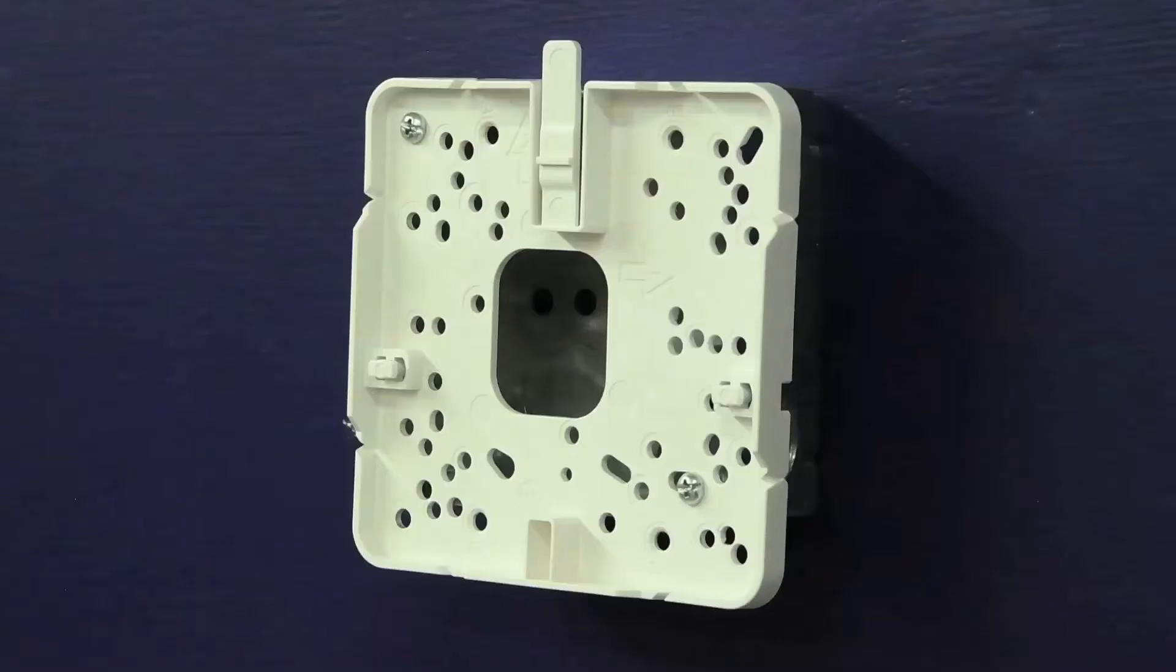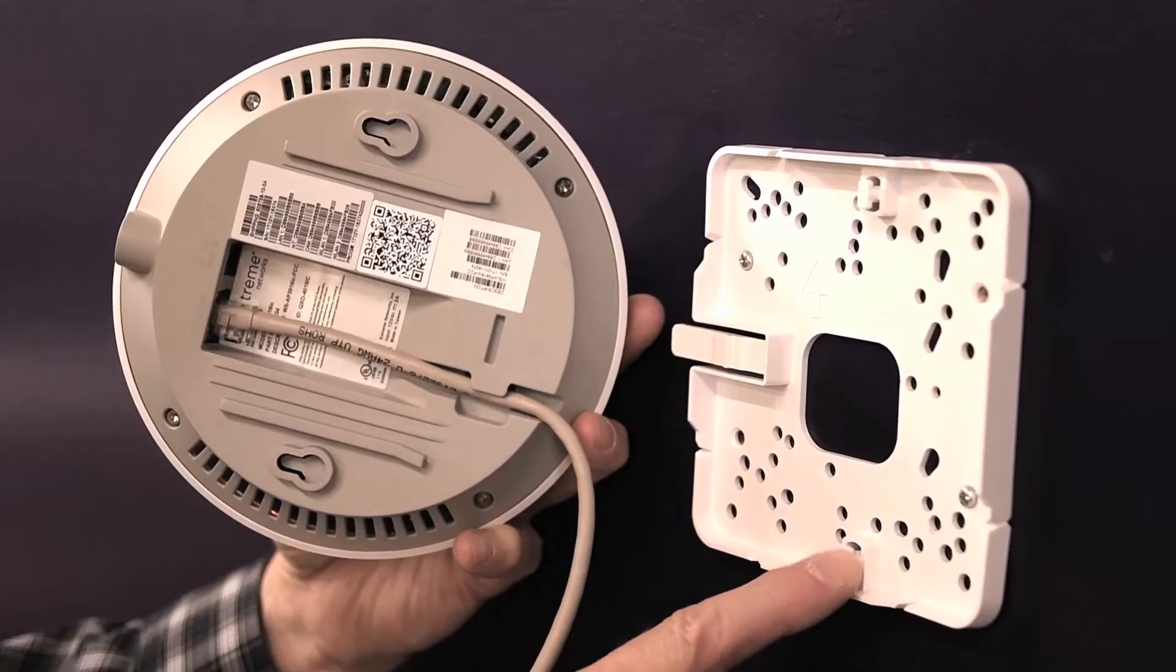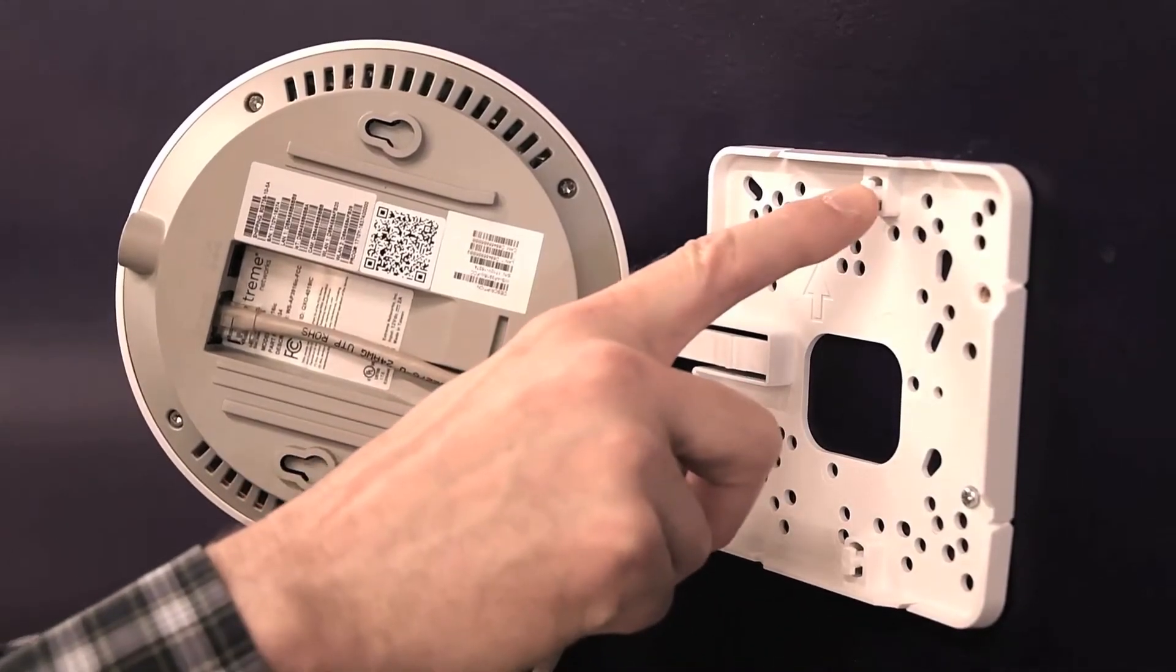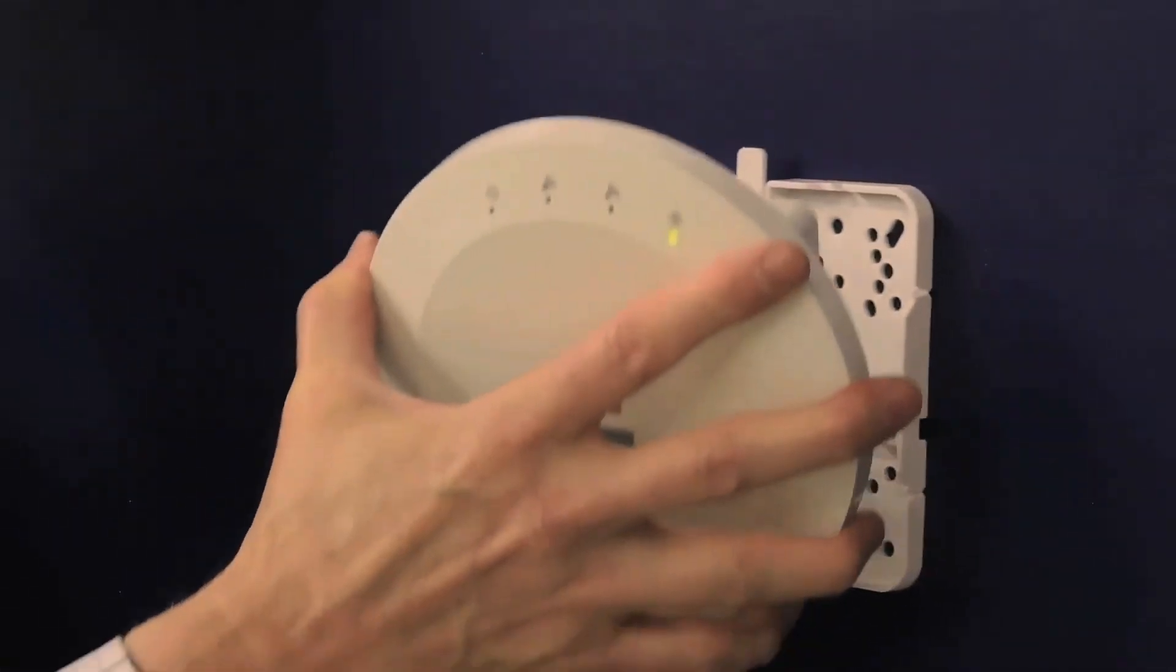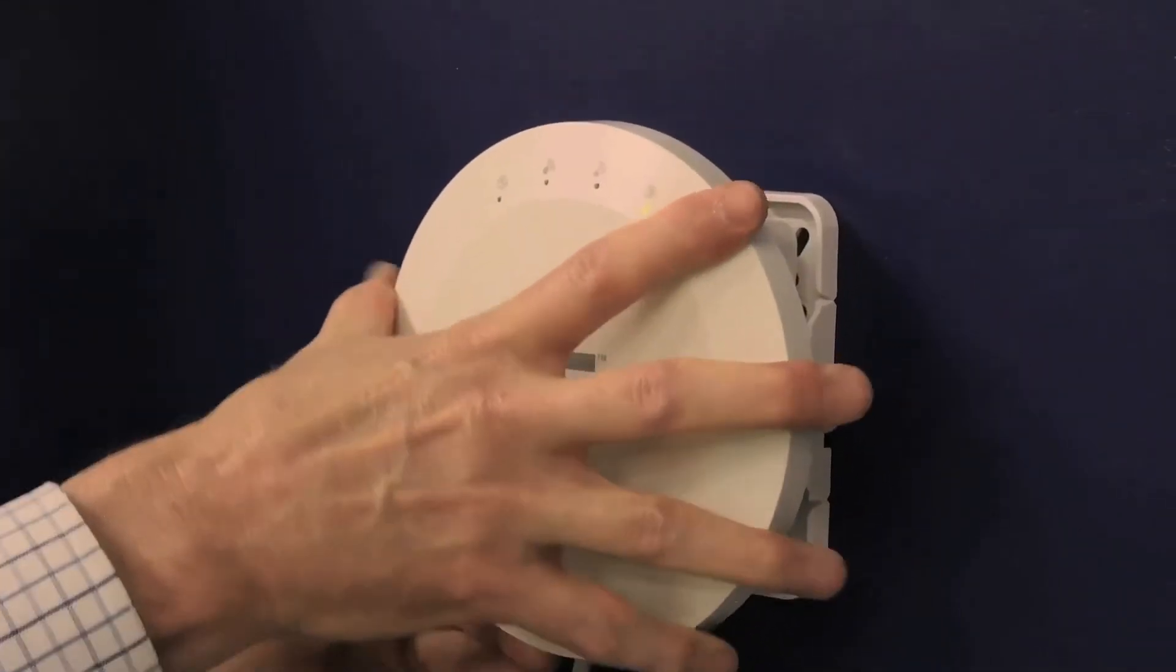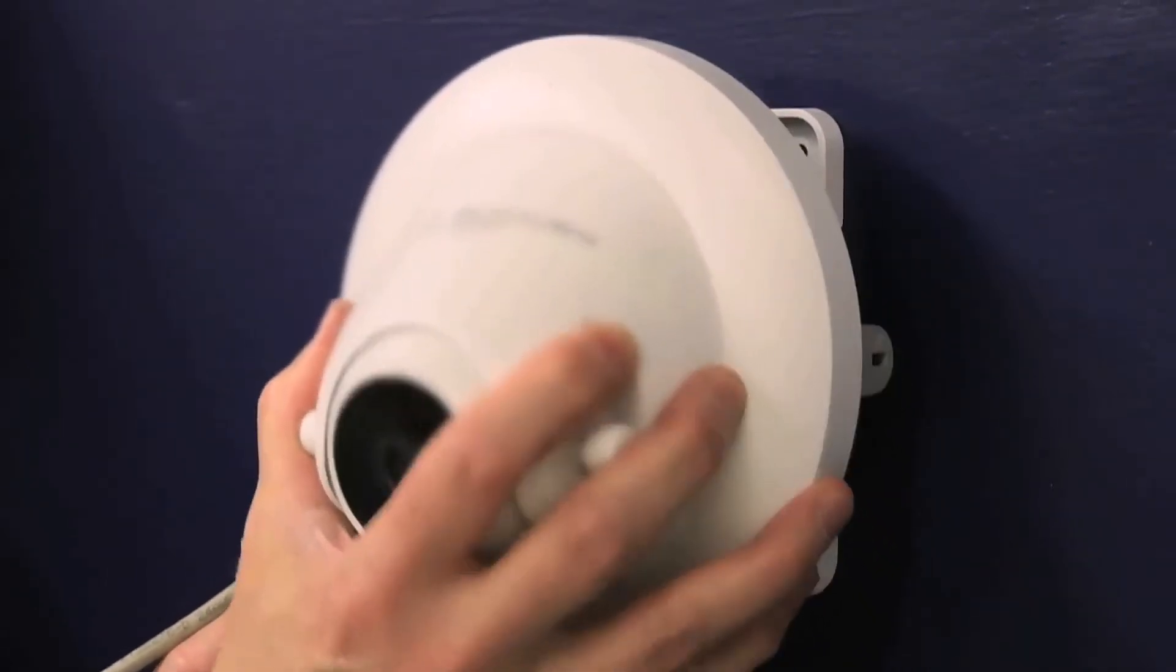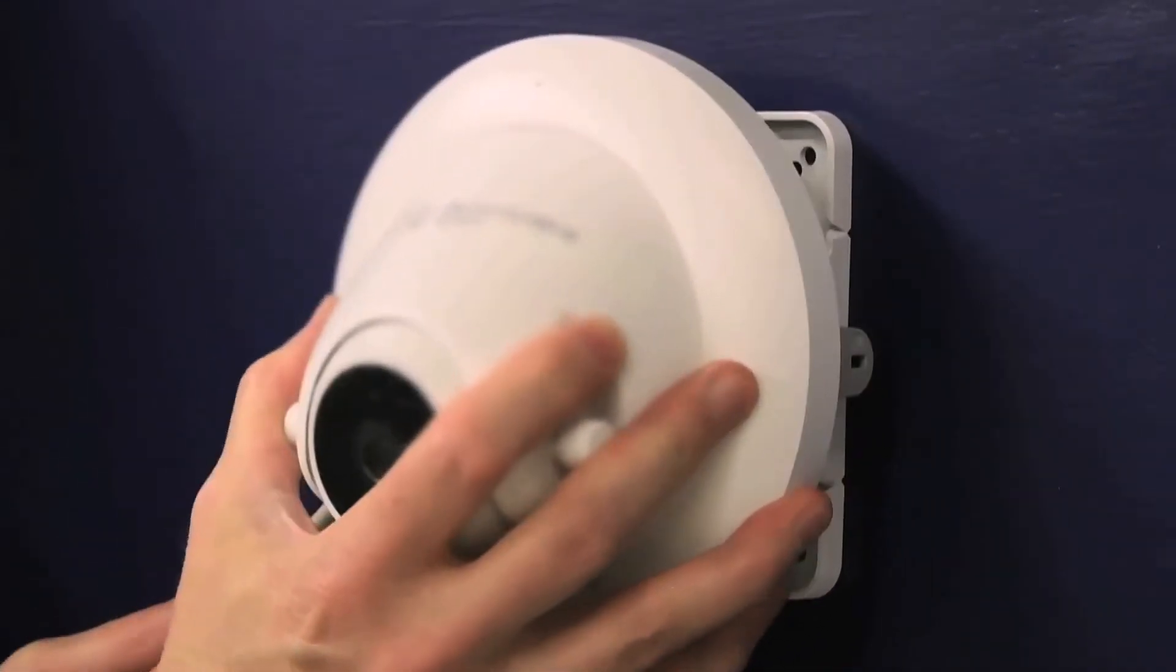Torque the screws to 7 inch pounds. Line up the AP's large keyholes with the keyhole posts on the bracket. Insert the posts into the keyholes and slide the AP either down or to the left. Wiggle the AP slightly to make sure it is attached securely.